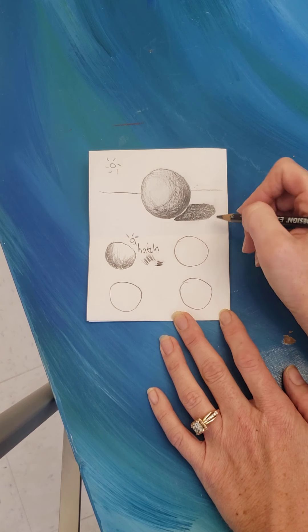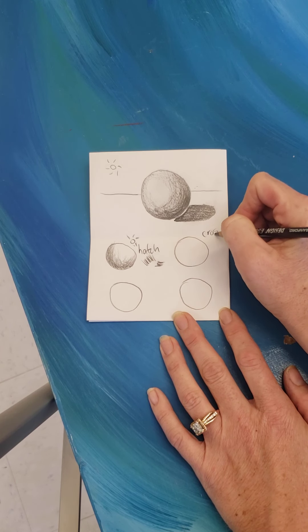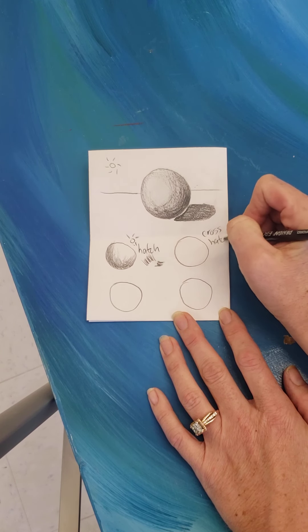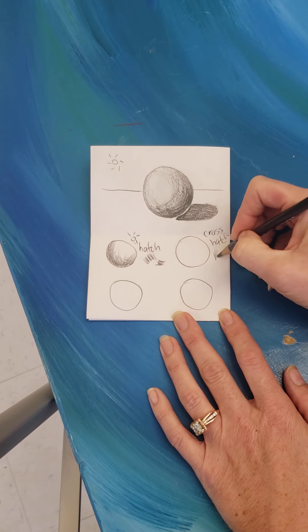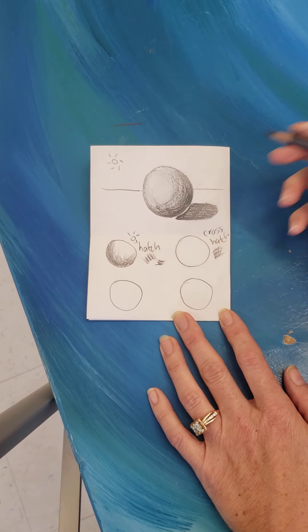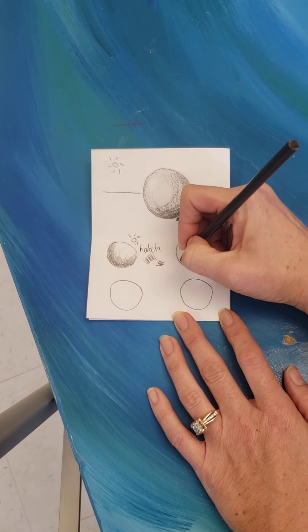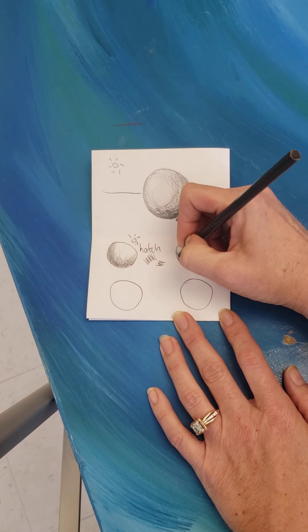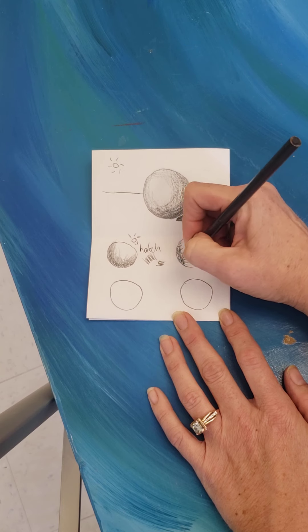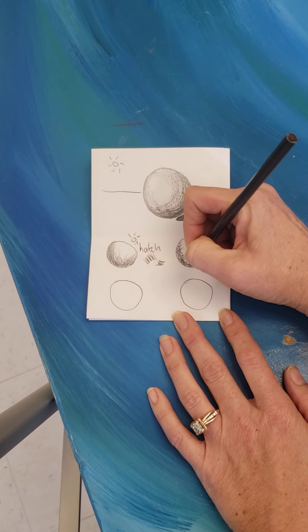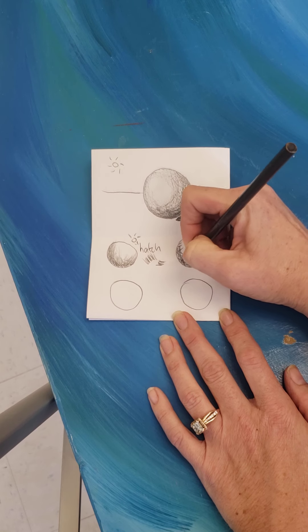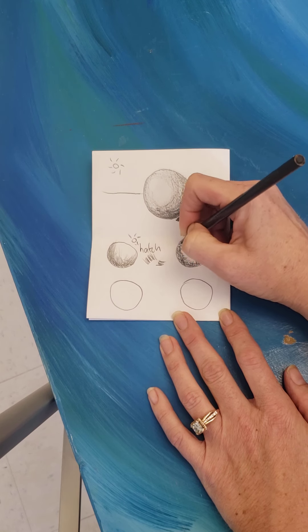The second is cross hatching. So they go one way and then the next. You can do little X's. They can go in a variety of directions. But it's just more layers in different directions. It covers more space and hides all those white spaces in between your lines.